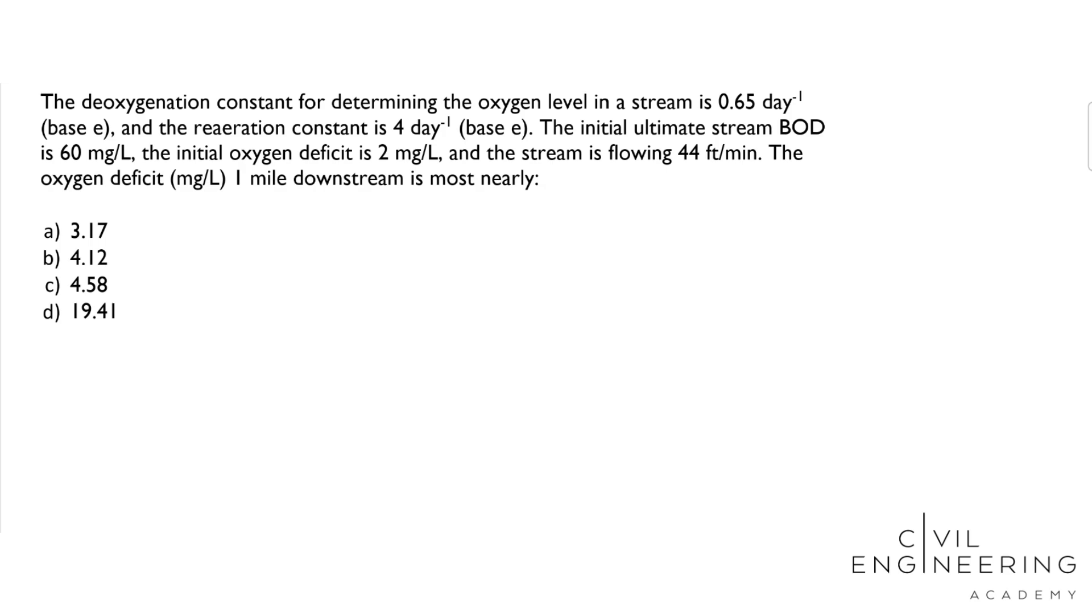The initial oxygen deficit is 2 mg per liter, and the stream is flowing at 44 feet per minute. The oxygen deficit in mg per liter 1 mile downstream is most nearly what? And then we have these 4 answer choices.